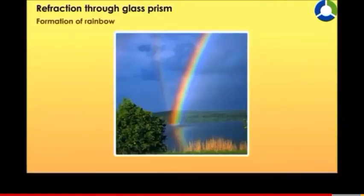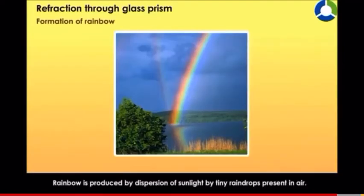Formation of rainbow. A rainbow is produced by dispersion of sunlight by tiny raindrops present in air.